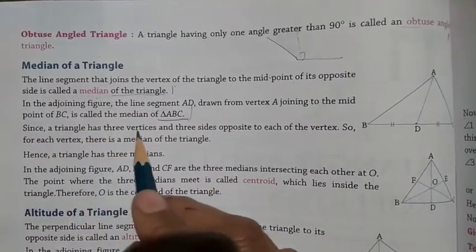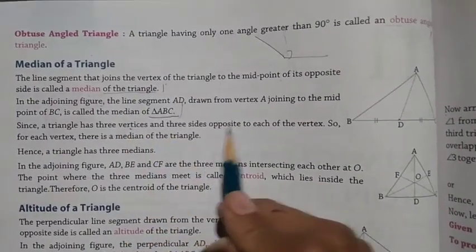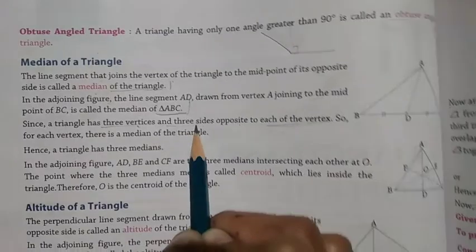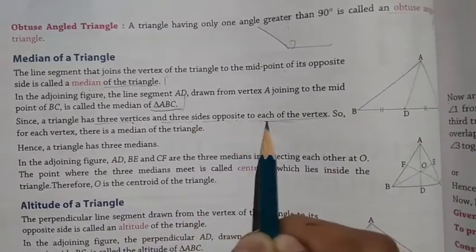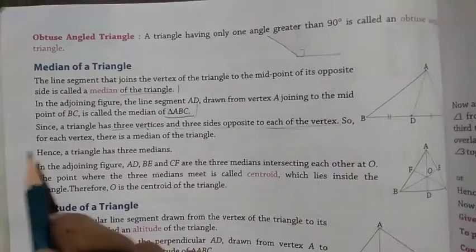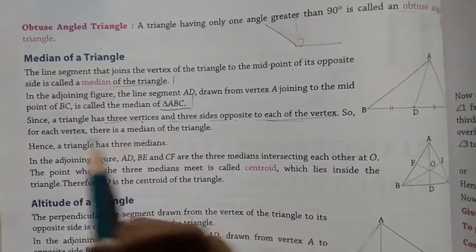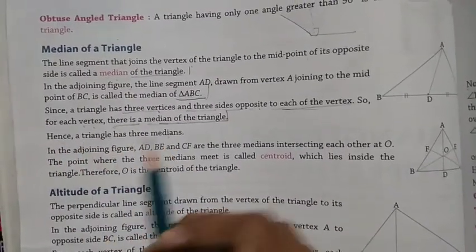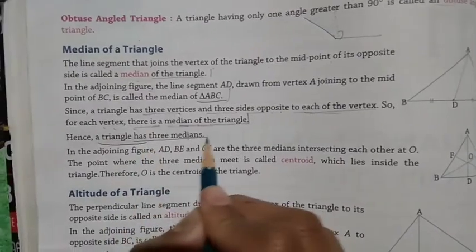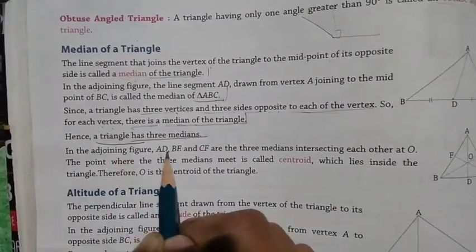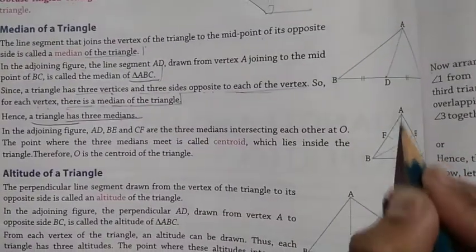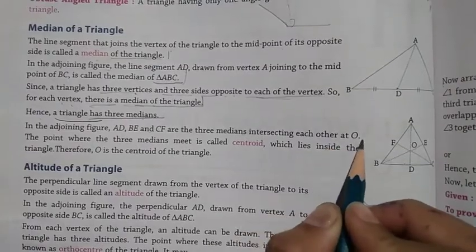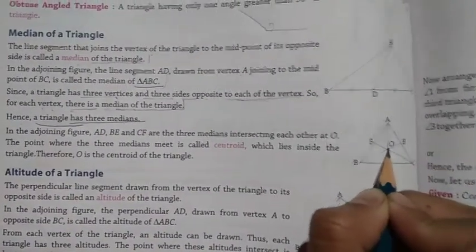Since a triangle has three vertices and three sides opposite to each vertex, for each vertex there is a median of the triangle. Hence a triangle has three medians. In the adjoining figure, AD, BE, and CF are the three medians and they intersect each other at point O.